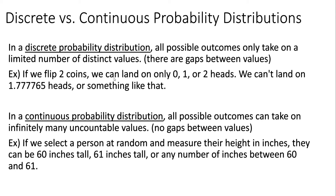The probability distributions we're going to be talking about in this section are all discrete. In a continuous probability distribution, all possible outcomes can take on infinitely many uncountable values, and there are no gaps between them. This is stuff we'll be seeing in Chapter 6. For example, if we select a person at random and measure their height in inches, they can be 60 inches tall, 61 inches tall, or any number of inches between 60 and 61.